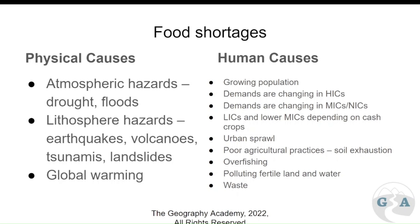Human causes — there are quite a few. A growing population means overall there's a higher demand. The demands are changing in HICs, so they're importing goods from all over the world and they want different types of food and different quantities of it.